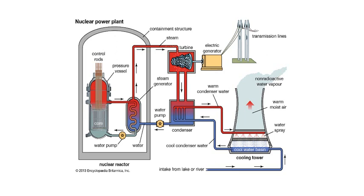Nuclear reaction takes place in the nuclear reactor. A large amount of heat energy is generated during the reaction. It is then transferred to the heat exchanger by means of a hot coolant metal. The water present in the heat exchanger absorbs the heat energy from the coolant and gets converted into steam. Once converted into steam, it is directly given to the turbines.